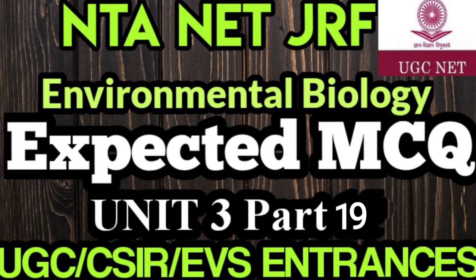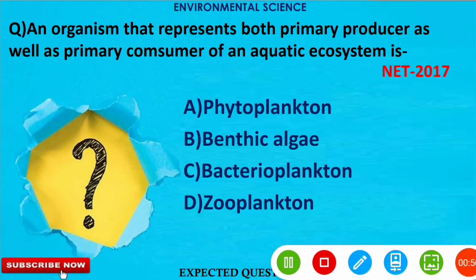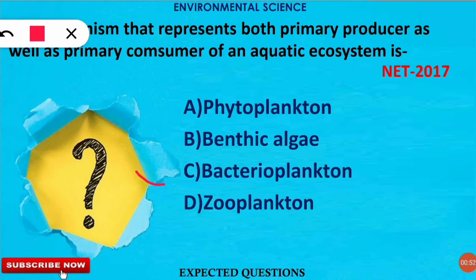The first question is: an organism that represents both primary producer as well as primary consumer of an aquatic ecosystem is called what? The correct option is option C — bacterial plankton. These are found in the aquatic ecosystem and act as both primary producer and consumer, because they can synthesize their own food using light (phytoplankton-type) as well as chemicals, and they also consume other organisms.